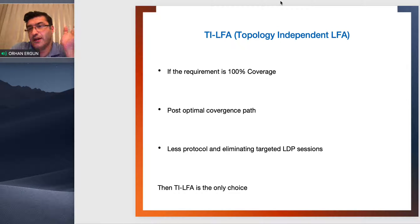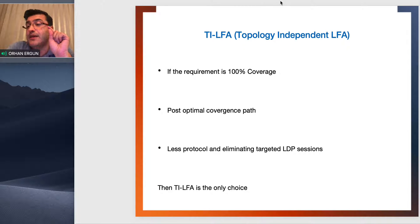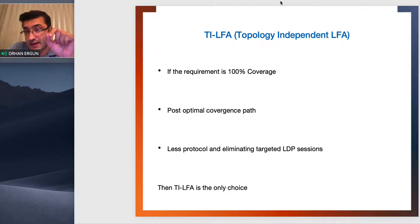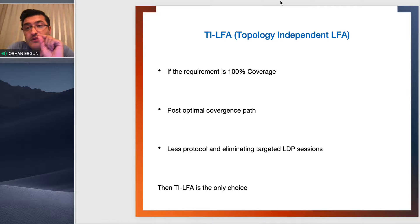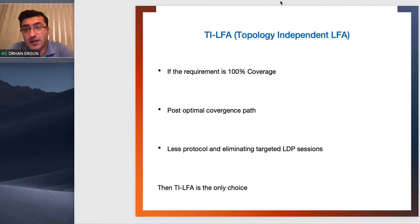If the control plane also agrees that the second path is optimal, then we call that FRR path a post-optimal convergence path. Post-optimal convergence path cannot be guaranteed with LFA or remote LFA. With TI-LFA — yes. Even with RSVP FRR, post-optimal convergence cannot be guaranteed. So RSVP-based protection may not give you that. LFA, remote LFA — no. TI-LFA — yes.